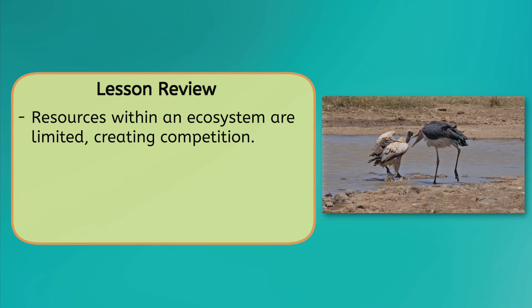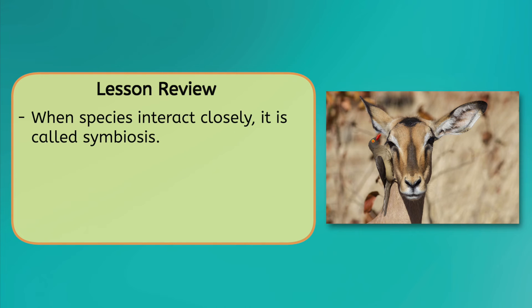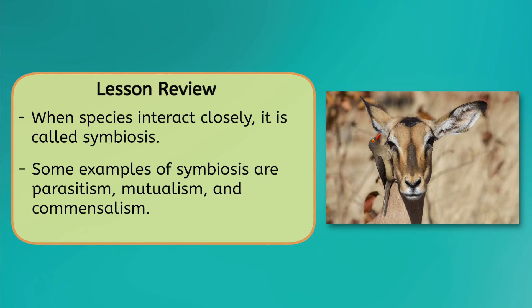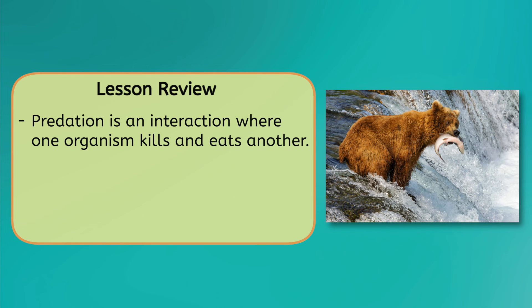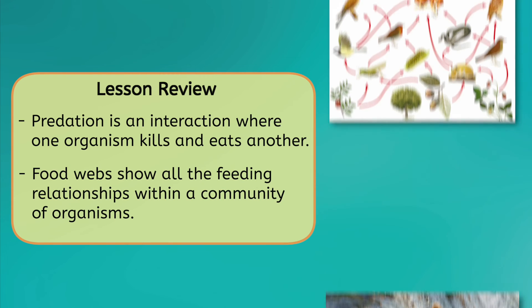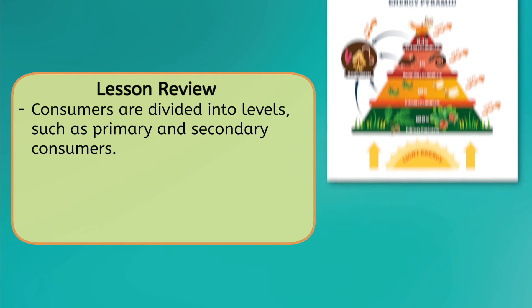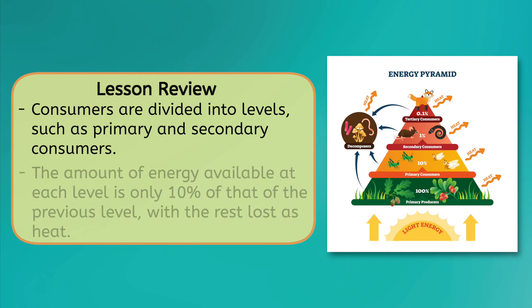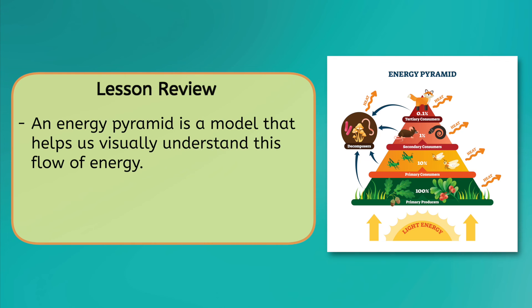We have wrapped up our lesson on food webs. We've learned that resources within an ecosystem are limited, creating competition over them. Species interact in ways that help them obtain the resources needed to survive. When species interact closely, it's called symbiosis — some examples are parasitism, mutualism, and commensalism. On the other hand, predation is an interaction where one organism kills and eats another. These interactions are depicted by models called food webs, which show all the feeding relationships within a community. Consumers are divided into levels, and the amount of energy available at each level is only 10% of the previous level, with the rest lost as heat. An energy pyramid is a model that helps us visually understand this flow of energy.